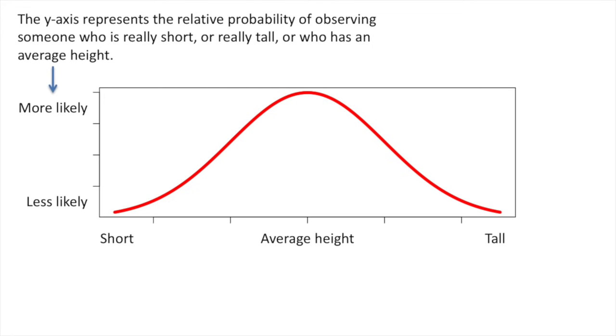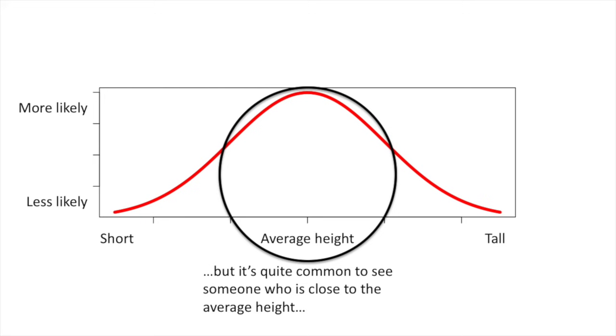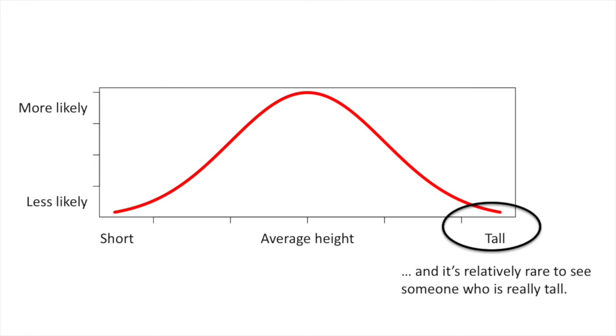The y-axis represents the relative probability of observing someone who is really short, or really tall, or who has an average height. For example, it's relatively rare to see someone who is super short, so the bell-shaped curve is relatively low in this part of the graph. But it's quite common to see someone who is close to the average height, so the bell-shaped curve is very tall in this region. And it's relatively rare to see someone who is really tall, so again, the bell-shaped curve is relatively low in this region.